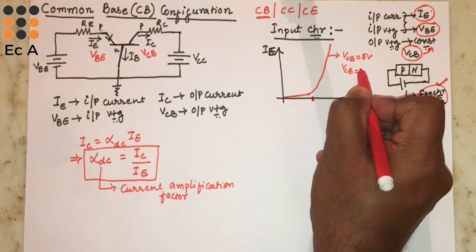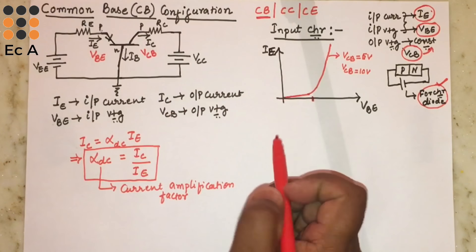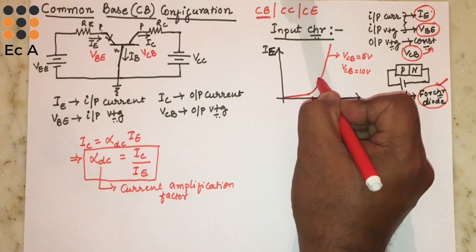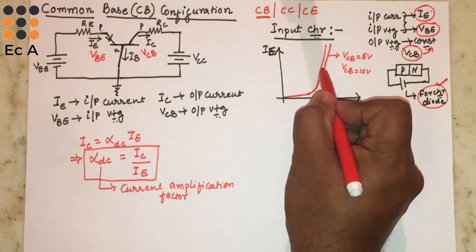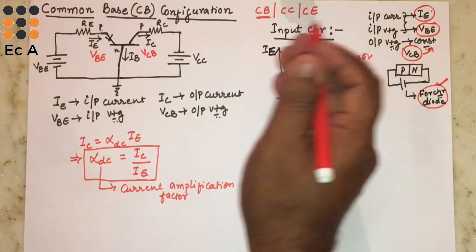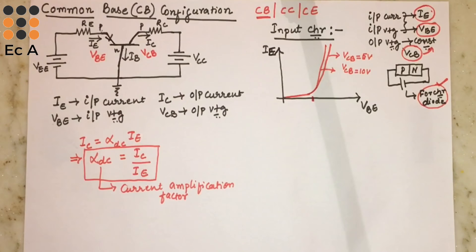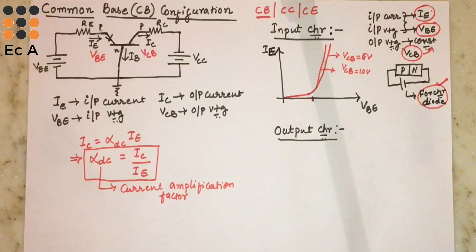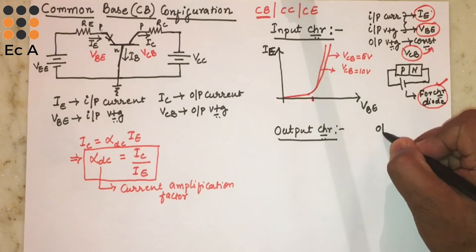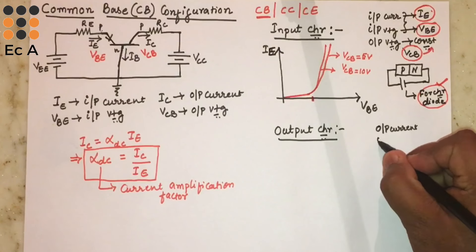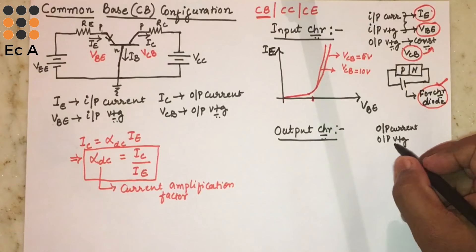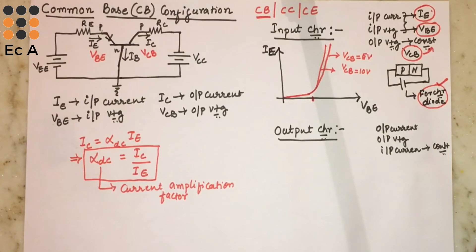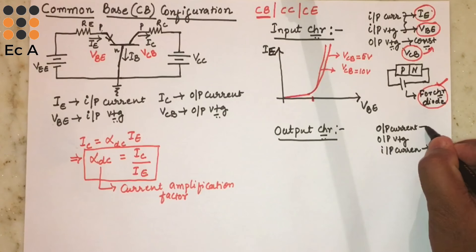As we keep increasing VBE, IE remains low until the applied voltage reaches the knee voltage or forward breakdown voltage, after which the current increases linearly. This graph is plotted with VCB kept constant — for example at 5 volts. When we increase VCB to 10 volts and repeat the analysis, the curve shifts towards the left, which means as we keep increasing VCB, the current IE also increases.